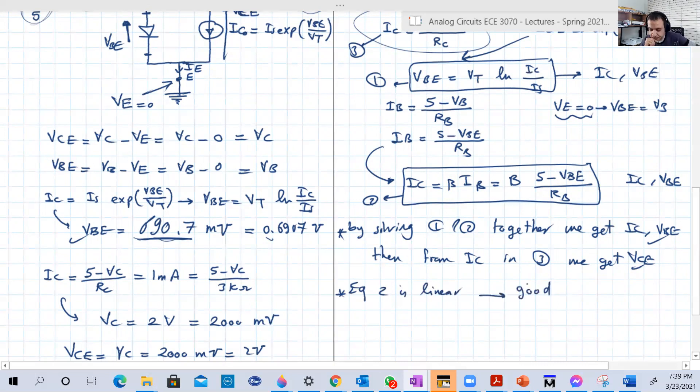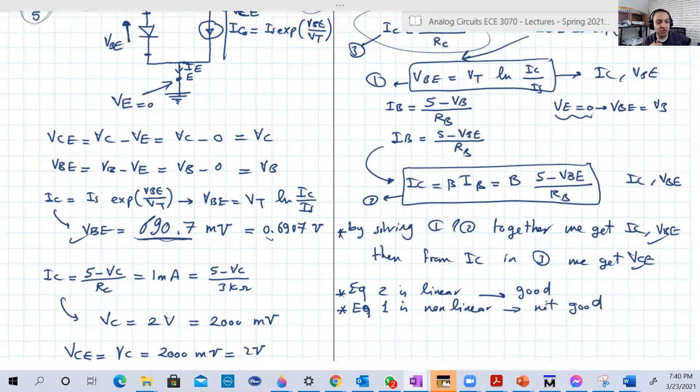But wait a minute here. If we look at 1 and 2, equation 1 and equation 2, equation 2 is linear, that's good. Equation 1, look, it's non-linear, that's not good. We cannot solve them together in a standard form, like what we used to do. Like for example, multiply equation by constant, then subtract them from each other. We cannot do that. This is a way to solve linear equations together. But we have now one of them is non-linear. So what we're going to do?